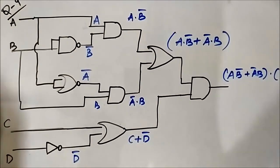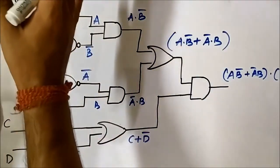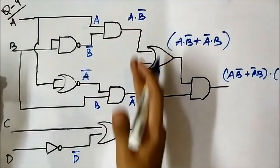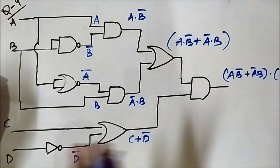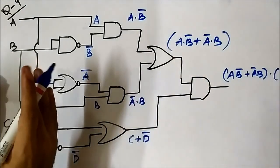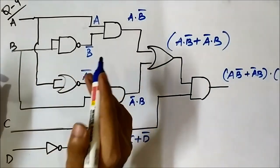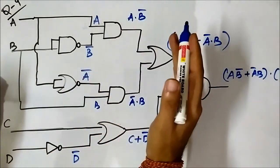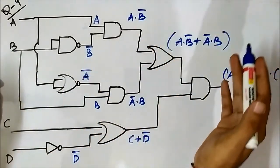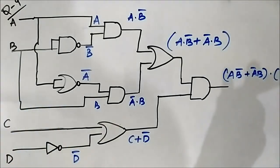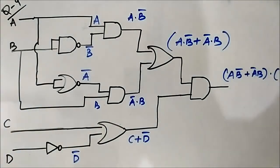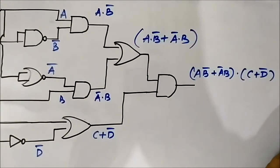Always segment the circuit into layers, solve one layer, go to the next layer, solve that, and finally arrive at the output. This is the final boolean output of this logic circuit.